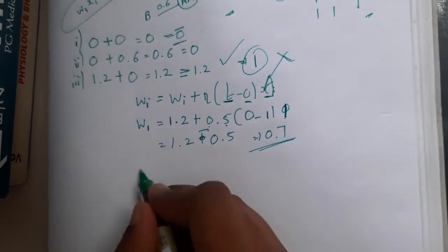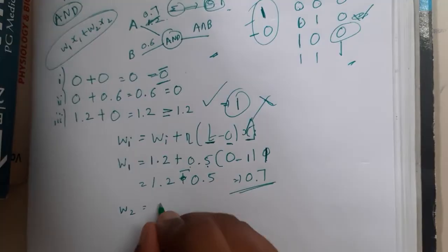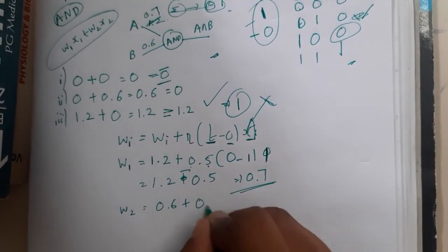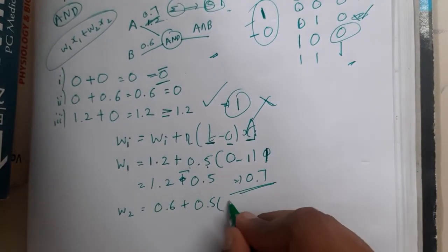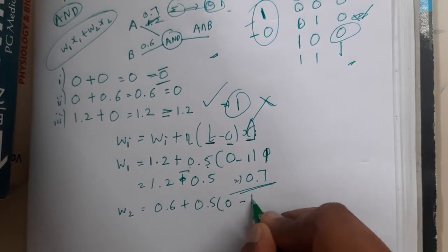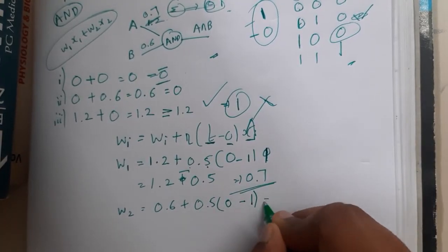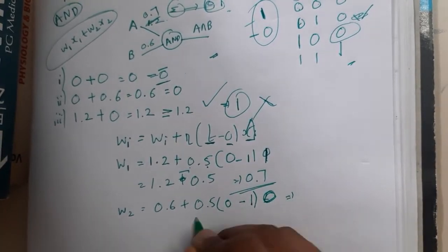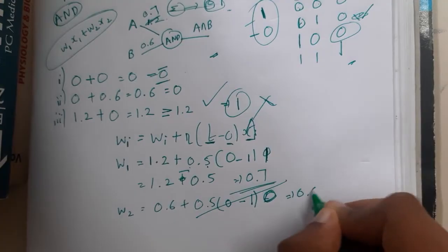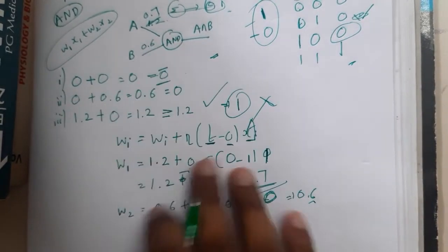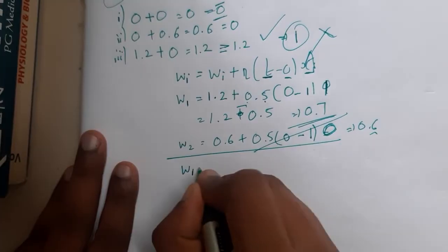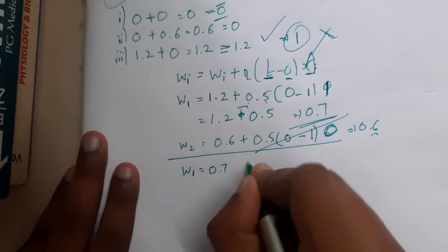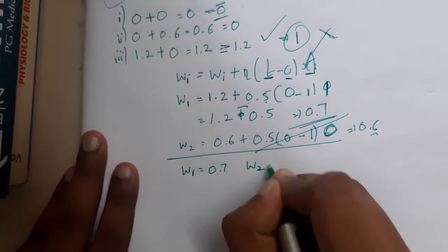For w2: w2 = 0.6 + 0.5×(0 − 1)×0 = 0.6 + 0 = 0.6. Since x2 = B = 0, there is no change; w2 remains 0.6. Updated weights: w1 = 0.7, w2 = 0.6.